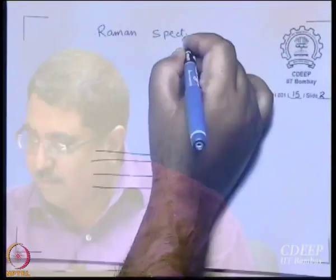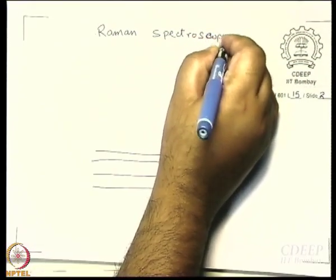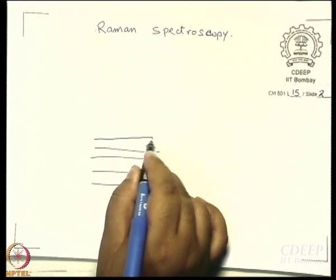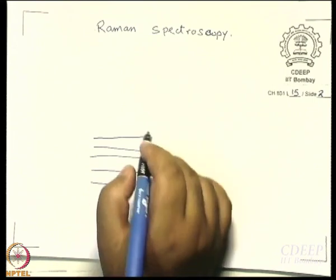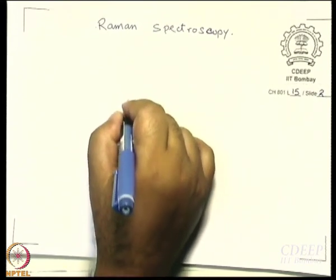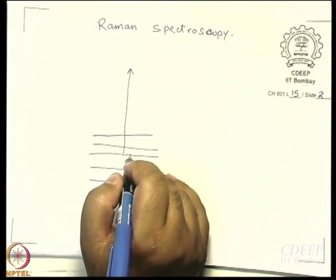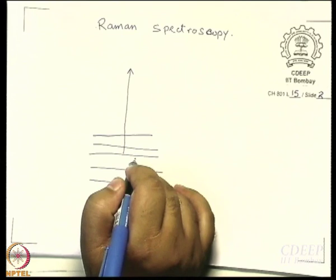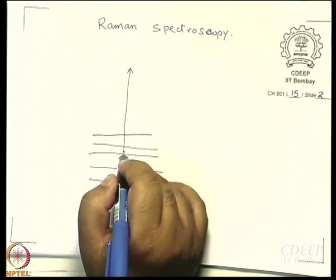Let us say these are vibrational levels of a molecule in the ground electronic state. Let us say you now hit the molecule with a laser of some particular wavelength nu. Then what will happen? The molecule will want to get excited. Let us say you start from the ground vibrational level — this is a manifold of states and I initiate an upward transition from here.